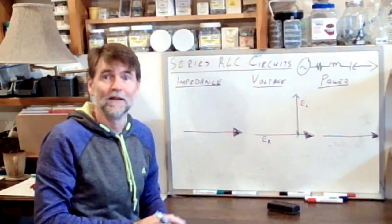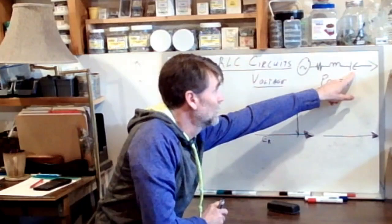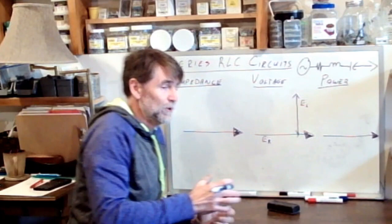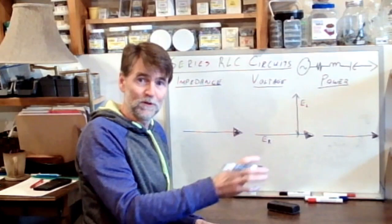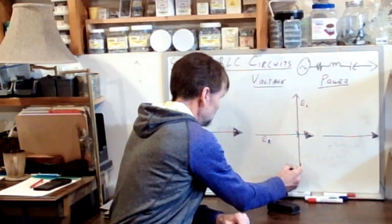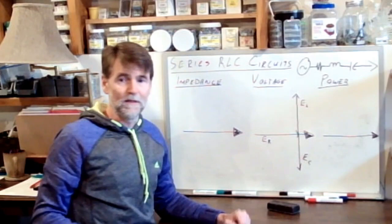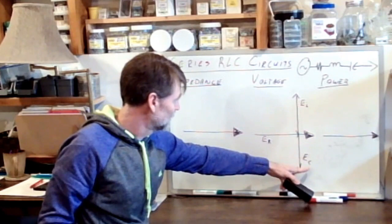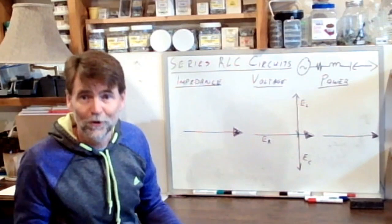Again, exactly as it was in the series RL circuit. What about the voltage vector representing the voltage drop across the capacitor? In a capacitive circuit, the current leads the voltage. The voltage is going to lag behind the current. We're going to find it down here, at 270 degrees, EC. Voltage drop across the resistor, voltage drop across the inductor, voltage drop across the capacitor.